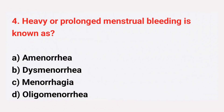Question number 4: Heavy or prolonged menstrual bleeding is known as? The right answer is option C, menorrhagia.